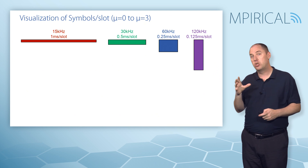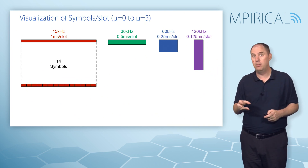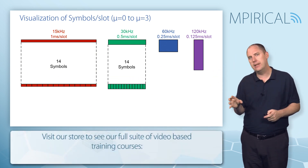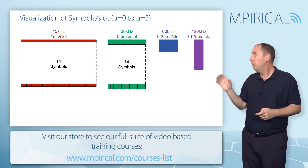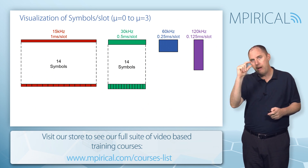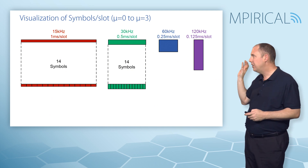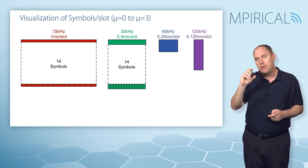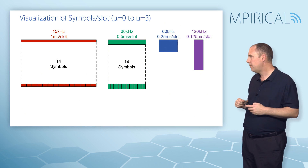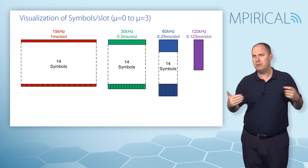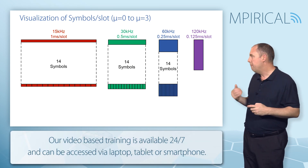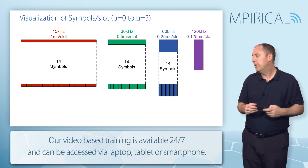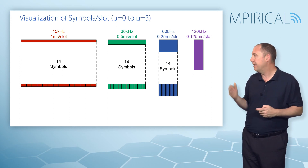Here we have these slots. In a slot there are either 14 symbols with a normal cyclic prefix. What I've tried to visualize is that in numerology 0 at 15 kilohertz, the symbols are very narrow in the frequency domain but quite long in the time domain. As you go to numerology 1 at 30 kilohertz, you can see we've gone bigger in the frequency domain and shorter in the time domain. So we're adjusting the frequency and time components of a symbol. It does look like you're getting more symbols, but you are using more frequency, so by definition it's a trade-off — you're not actually getting any more symbols per second as you move through these different options.